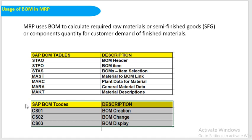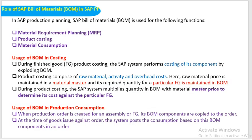The T-codes generally used for BOM: CS01 for BOM creation, CS02 for BOM change, and CS03 for BOM display. This BOM is used in multiple areas — material requirements planning, product costing, and material consumption.